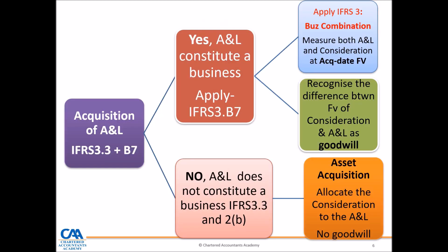Now let's focus on acquisition of assets and liabilities. One has to go to IFRS3, paragraph 3, and also use paragraph B7 of IFRS3. The key issue on acquiring assets and liabilities is that the accounting depends on whether those assets and liabilities constitute a business or not. If the assets and liabilities constitute a business, we can apply IFRS3. But first, we need to apply IFRS3 to assess whether they constitute a business. When they are considered a business, it is a business combination.